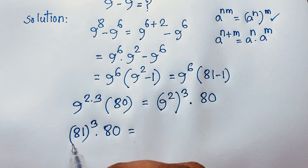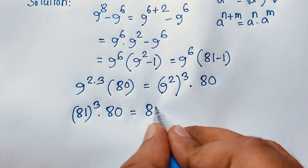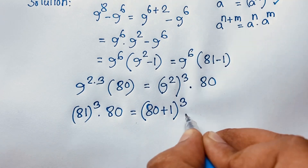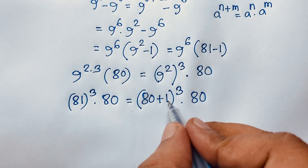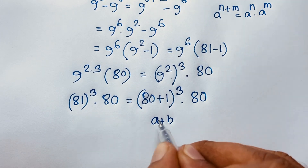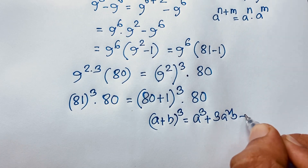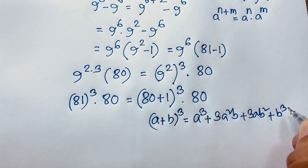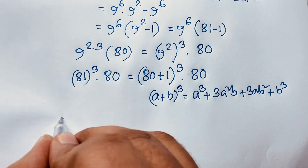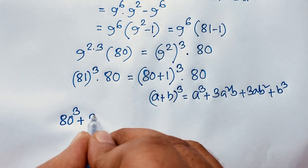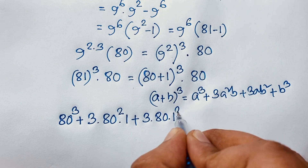Now we need to evaluate 81 to the power 3. We write 81 as 80 plus 1, so we have (80 plus 1) to the power 3 times 80. Using the binomial expansion formula (a plus b) cubed equals a cubed plus 3a squared b plus 3ab squared plus b cubed, where a is 80 and b is 1, we expand: 80 cubed plus 3 times 80 squared times 1 plus 3 times 80 times 1 squared plus 1 cubed, all times 80.